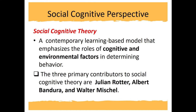Some psychologists proposed models of personality quite different from those of Freud and the traits theorists. Social cognitive theorists believe that personality consists of individuals' repertoire of behavior and ways of thinking about themselves and the world. Social cognitive theory is a contemporary model that maintains that to explain behavior, you need to take into account cognitive and social aspects. The three primary contributors are Julian Rotter, Albert Bandura, and Walter Mischel.